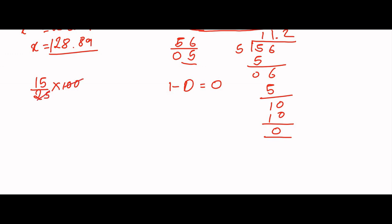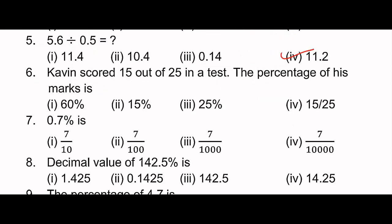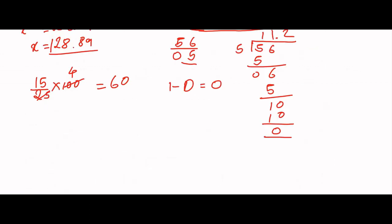So 25 and 100: 4 into 15 is 60, so 60 percentage. For 0.7 percentage: 7 divided by 10 will give 0.7, and 7 by 10 into 100 gives the percentage. We are going to cancel this.